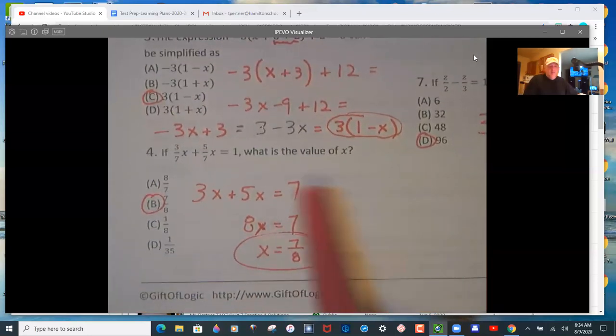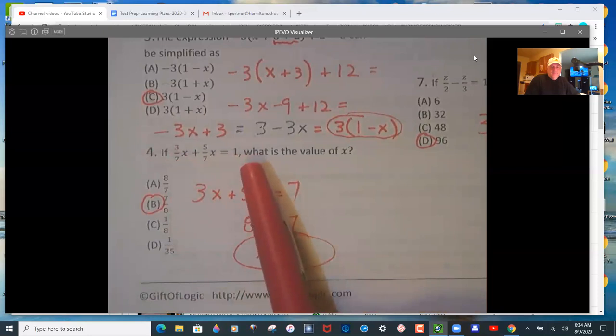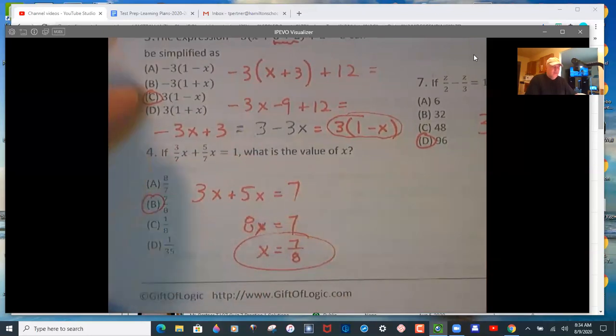Number 4, multiply by 7, left to right. This is your result. Add like terms and divide.